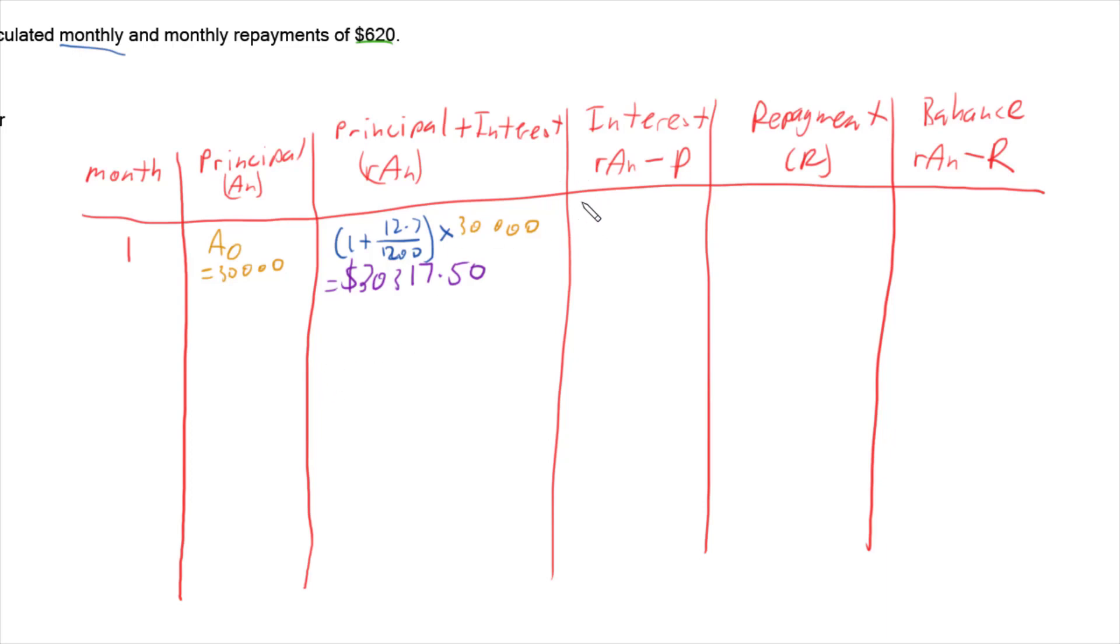We then take that number, 30,317.50, we minus off our principal, 30,000. And that's going to give us the interest, the extra that is paid this month. So there's an extra $317.50 paid this month.